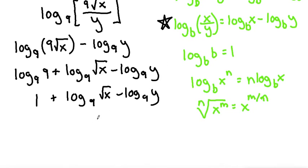Let's write 1 plus log base nine. First, we'll write the x with a power of the m, which is one, divided by the n, which is two. So a square root is the same thing as x to the power of one half. Then bring down the log base nine of y.